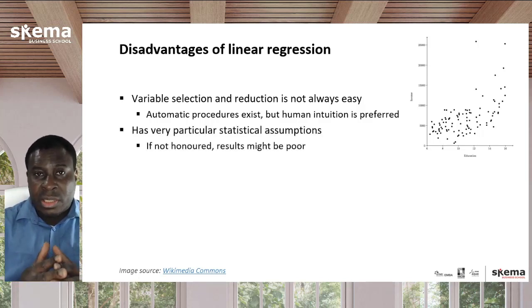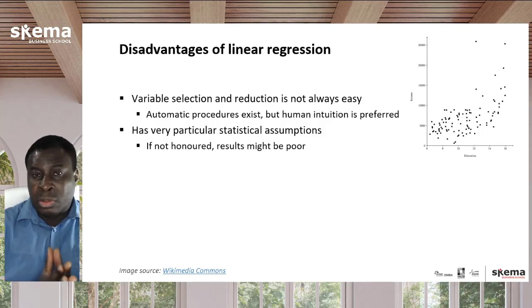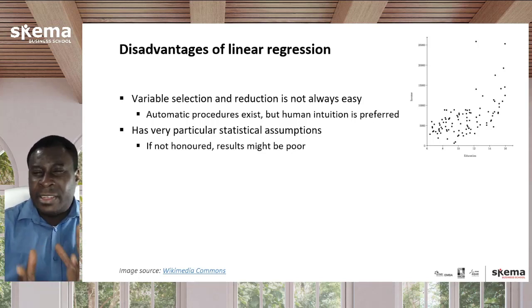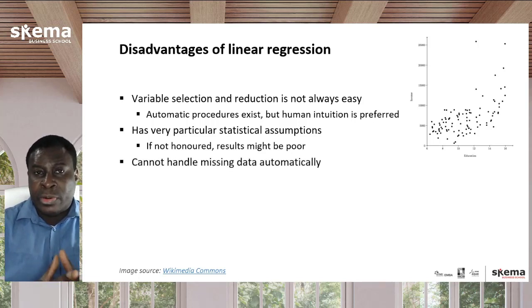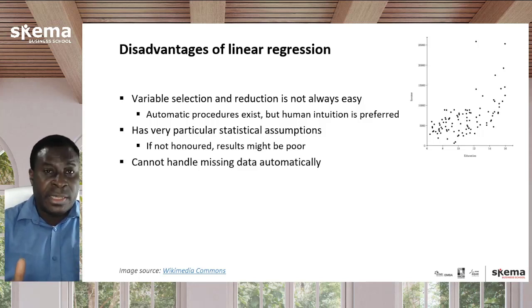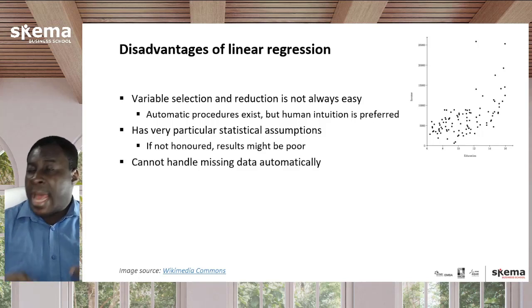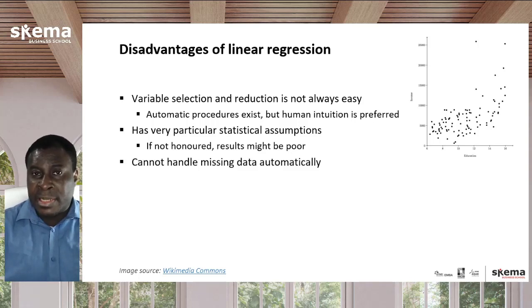Linear regression has some very particular statistical assumptions, such as normal distribution of the error terms. And if these statistical assumptions are not met by your data, then you might not have very good results. Another concern is that linear regression cannot handle missing data automatically — you cannot have missing data anywhere in the dataset. So you have to deal with missing data somehow before you can do the analysis, though there are techniques available for that.